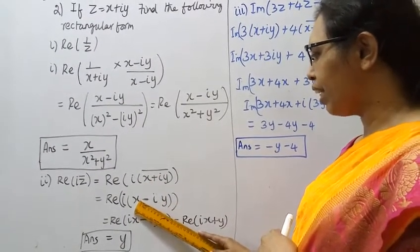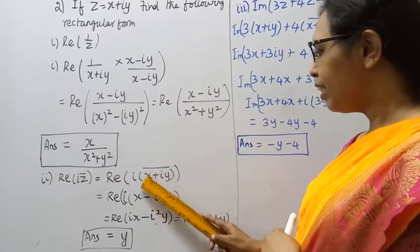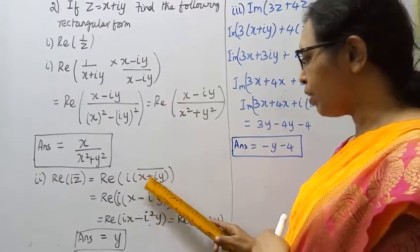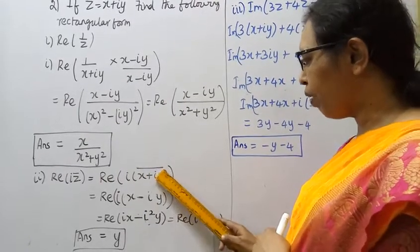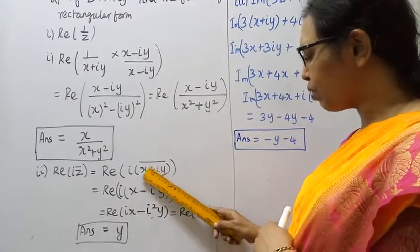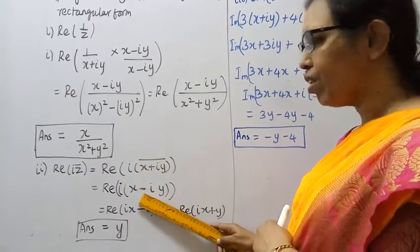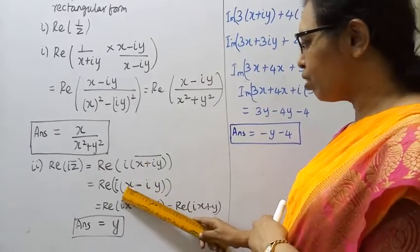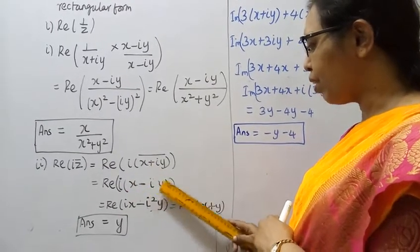For x plus iy bar, the conjugate changes the sign: plus becomes minus, minus becomes plus. So i into (x minus iy).